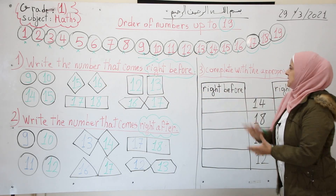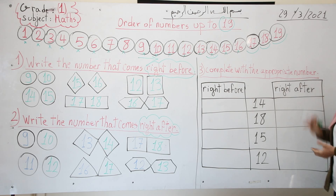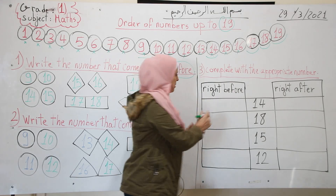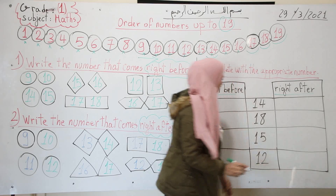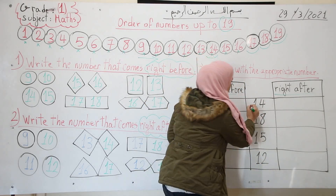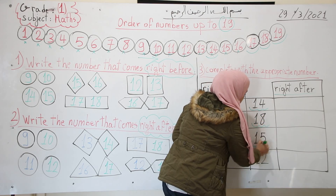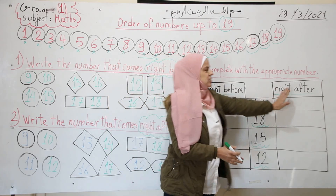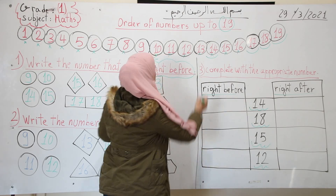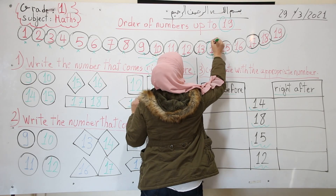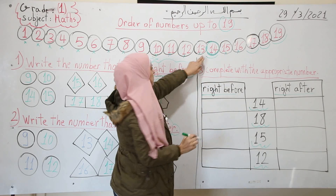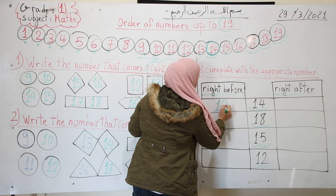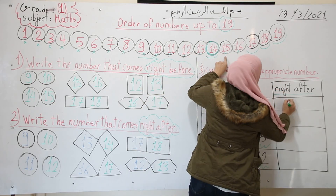Exercise 3: complete the table with the appropriate number. I have a table with columns for 'right before' and 'right after,' and four numbers in the middle: 14, 18, 15, and 12. For number 14: I want to find the number that comes right after 14. Looking at the number line, 13 is right before 14 and 15 is right after, so I write 15.